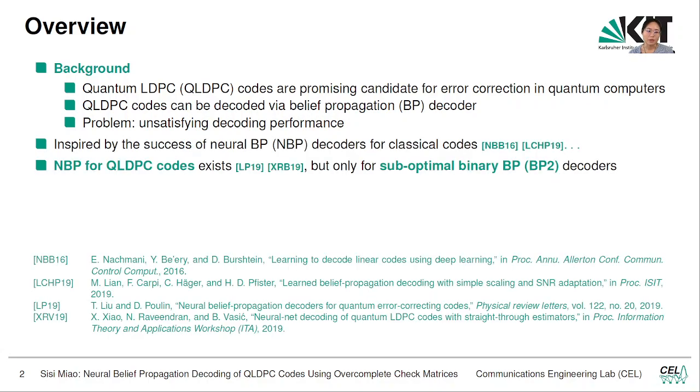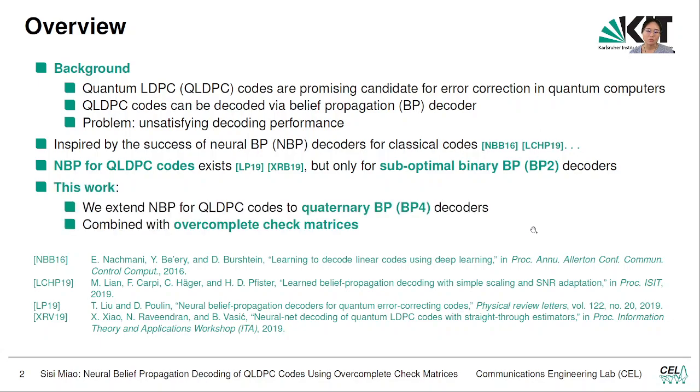Inspired by the success of neural BP for classical codes, people have applied neural BP for quantum LDPC codes, but so far only to the suboptimal quantum binary BP2 decoders. This is not as good as the quaternary BP decoder which we will be looking at in this work. We also want to combine this with overcomplete check matrices, which gives us both decoding gain and benefits in training.